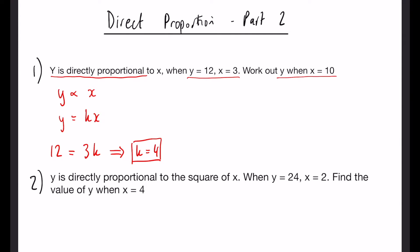So then what we do is we take our original equation here and we can now say that k equals 4 so we know that y equals 4x. Now they're asking us to work out y when x is 10 so all we have to do is substitute the x is 10 into our equation now so we know y is equal to 40 and that's our final answer.